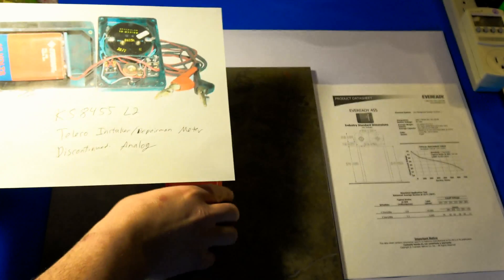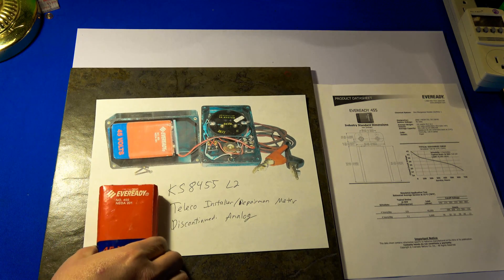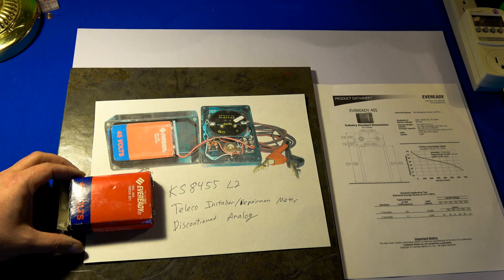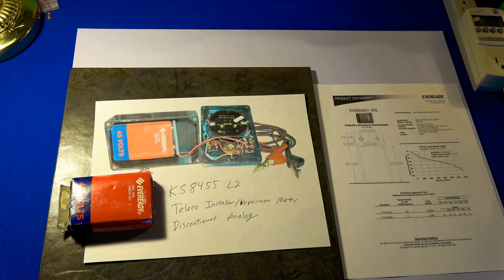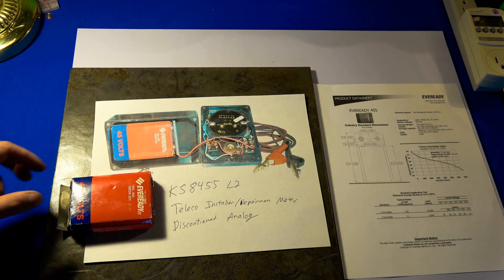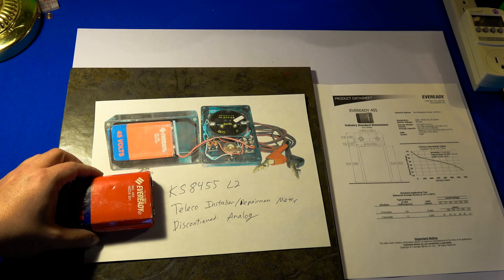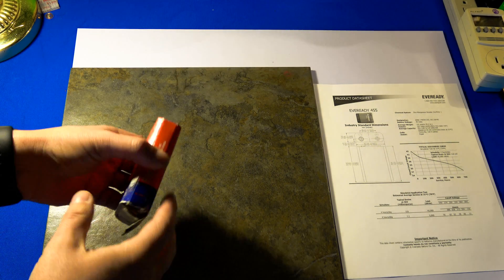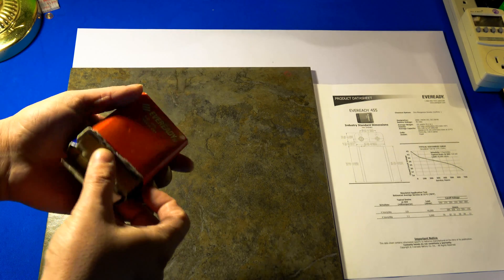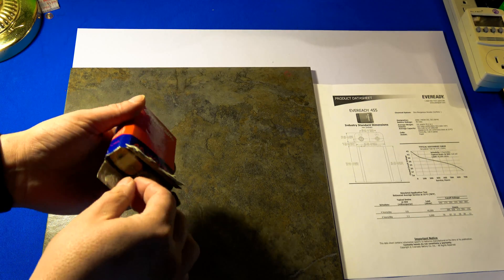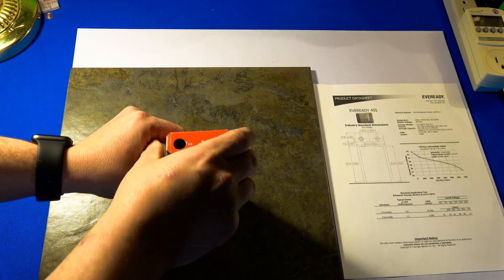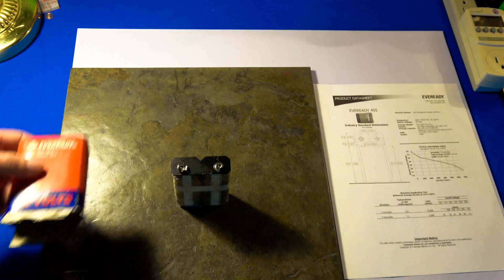And here is an example of one of the telecom meters that this battery style is installed in, which is the KS8455. This one's the L2 analog meter. That was the best picture I can get for purposes of this video. Of course, now what you've all been waiting for. Let's see, hopefully there's nothing leaked, but considering that's still putting out really good voltage. And there you go.